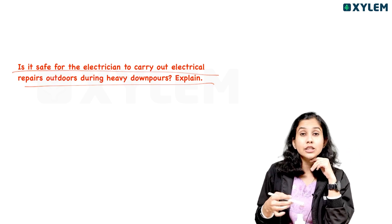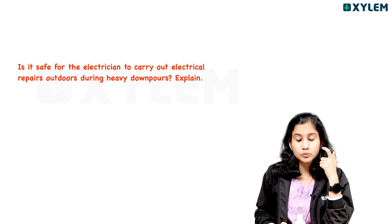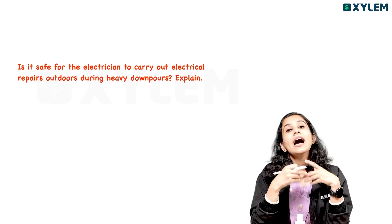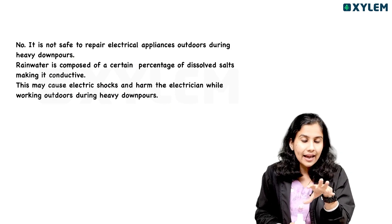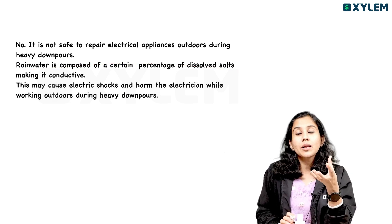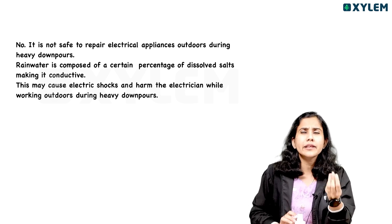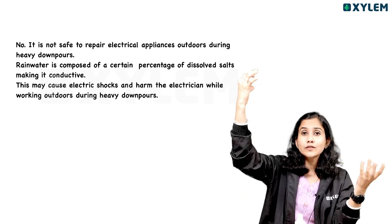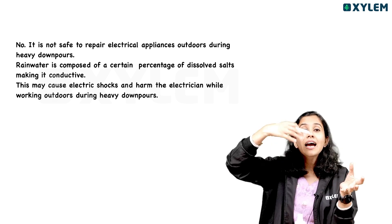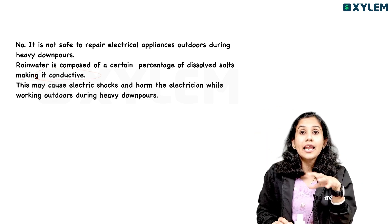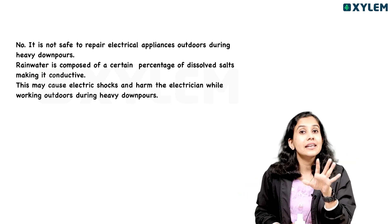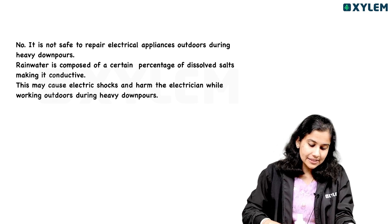Is it safe for an electrician to carry out electrical repairs outdoors during heavy downpours? Definitely that is not safe, because rainwater is not distilled water. In the atmosphere, rainwater picks up dissolved salts, making it a good conductor of electricity. That is why it is not safe to do electrical work in the rain.